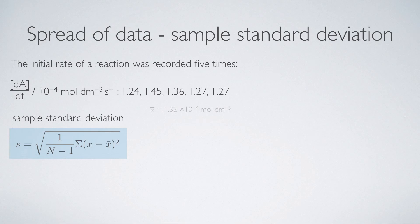Here we have the spread of data from a data set which I've used before, but is here in full. I've used the initial rate of a reaction to determine the mean, the average initial rate of reaction from five different experiments. And so my mean value is 1.32 times 10 to the minus four, to the appropriate number of significant figures.